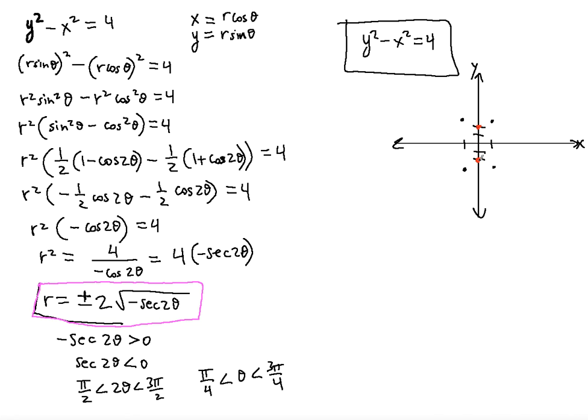As you can see, this is the equation of a hyperbola that looks something like this — opening upward and downward.